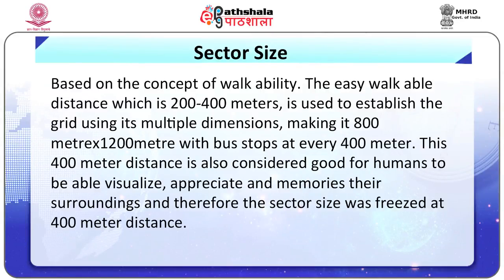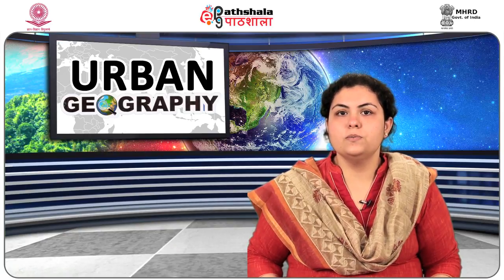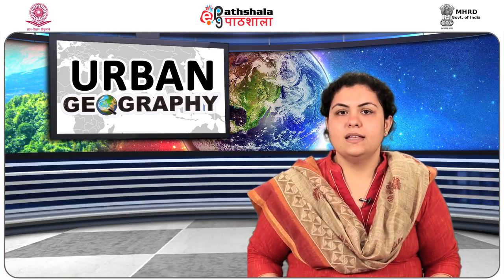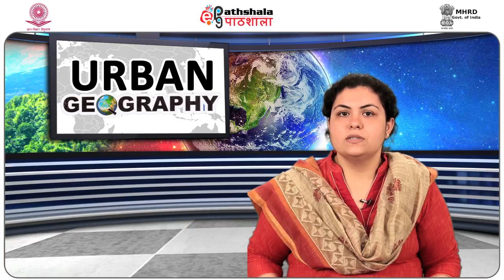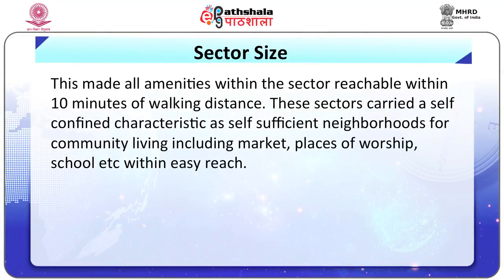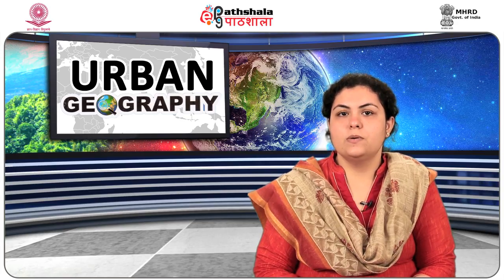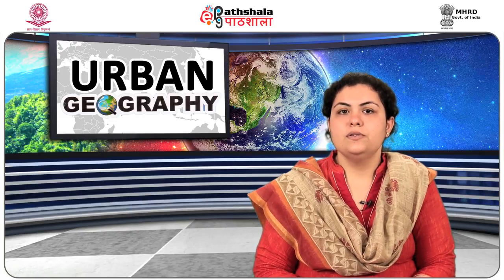Based on the concept of walkability, the easy walkable distance of 200 to 400 metres is used to establish the grid, using its multiple dimensions making it 800 metres by 1,200 metres, with bus stops at every 400 metres. This 400-metre distance is also considered good for humans to visualize, appreciate, and memorize their surroundings, and therefore the sector size was fixed at 400 metres distance, making all amenities within the sector reachable within 10 minutes of walking. These sectors carried a self-sufficient characteristic as self-contained neighborhoods for community living, including markets, places of worship, and schools within easy reach, and were expected to cater to a population range between 5,000 to 35,000 during the initial phases.